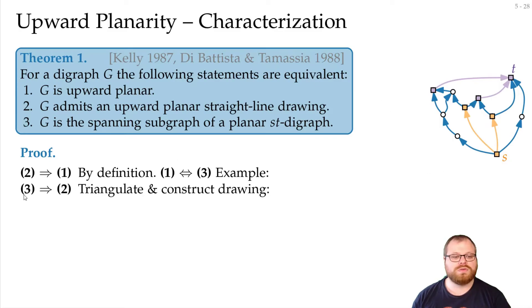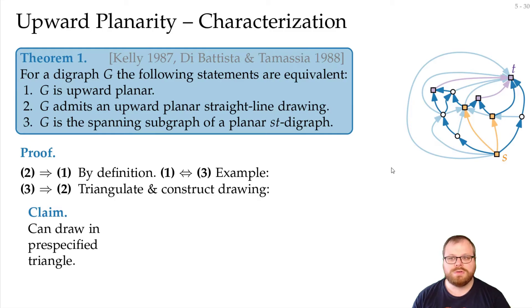If we want to go from 3 to 2, so we have the subgraph of a planar ST-digraph, and we want to get such a planar straight line drawing, then we proceed as follows. First, we triangulate the graph, so we add directed edges such that we don't get any cycles, such that every face becomes a triangle. And then we inductively construct a drawing of that.